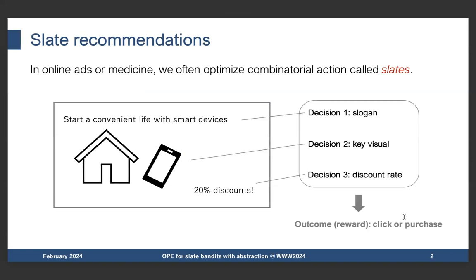Starting from describing slate recommendation: in online advertisement or medical treatment, we often optimize a combination of actions called a slate. A slate consists of multiple sub-actions. For example, in online advertisement, we have several choices of decisions such as slogan, key visual, or discount rate, all of which can affect the final outcome or reward such as click or purchase. When evaluating slate recommendation, we want to consider this complex relationship among multiple sub-actions in order to identify an efficient slate recommendation policy.